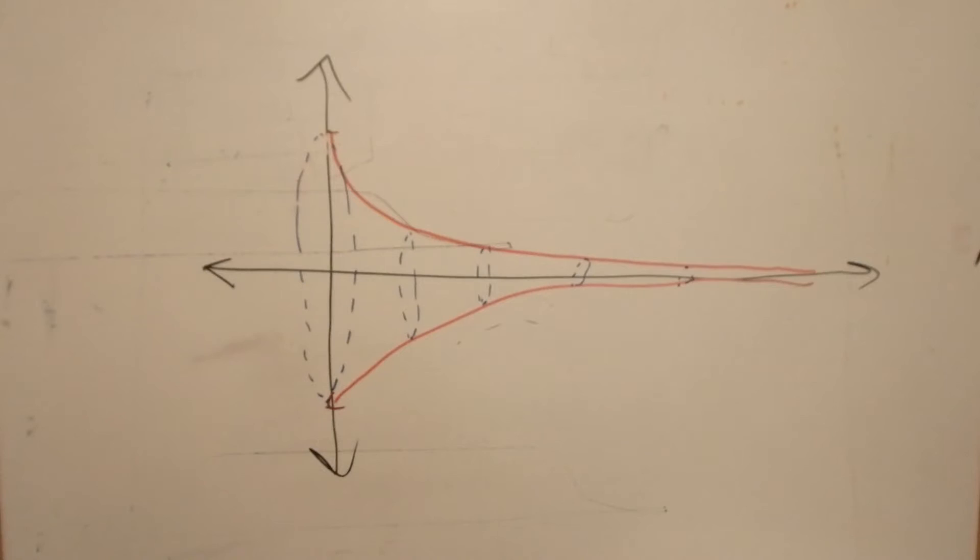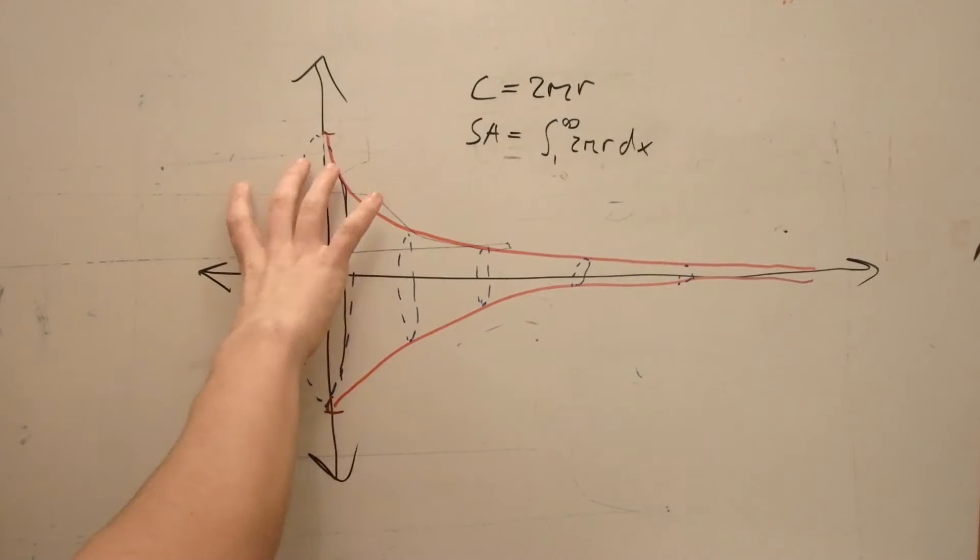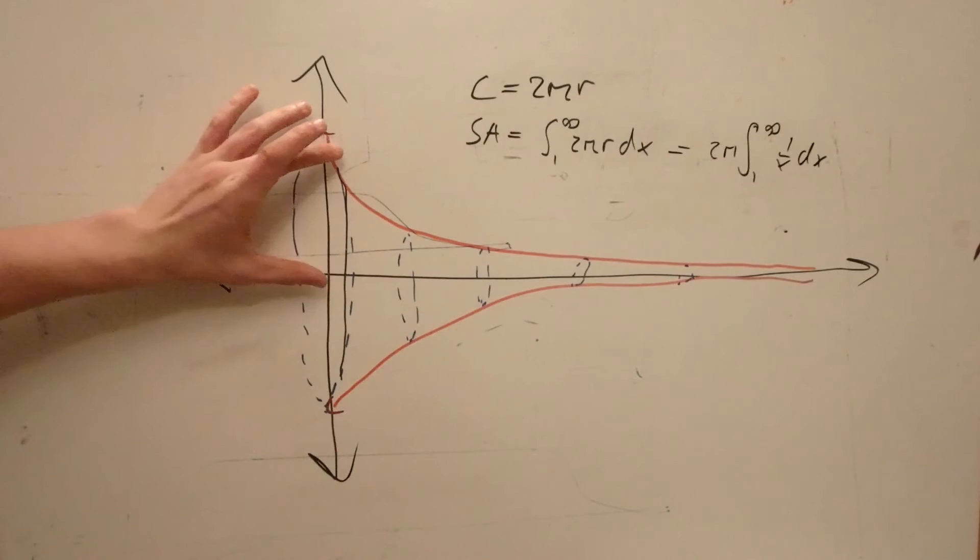So essentially the way we find a surface area is we take the circumference, which can be represented by 2πr, and we add an infinite amount of circumferences from 1 all the way to infinity. So what we can do is we can pull out the 2π using our knowledge of integral rules, and then we can rewrite r as 1 over x, because the radius will always be the height, and it just gets smaller and smaller, it's represented by 1 over x.